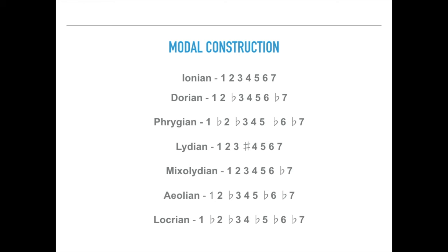Lydian: 1, 2, 3, sharp 4, 5, 6, 7. Mixolydian: 1, 2, 3, 4, 5, 6, flat 7. Aeolian: 1, 2, flat 3, 4, 5, flat 6, flat 7. Locrian: 1, flat 2, flat 3, 4, flat 5, flat 6, flat 7.